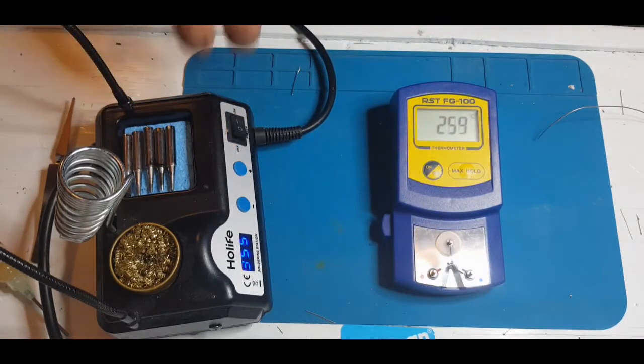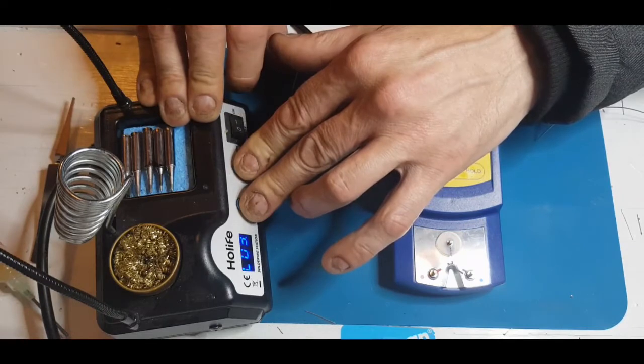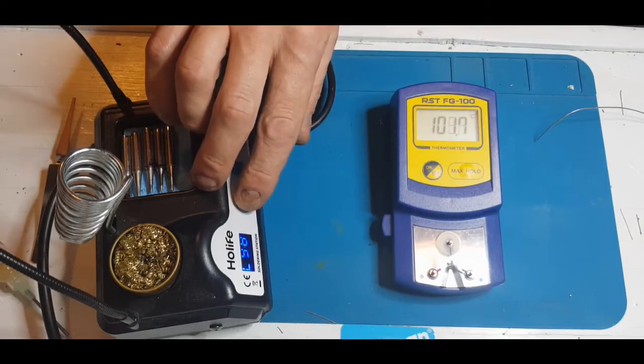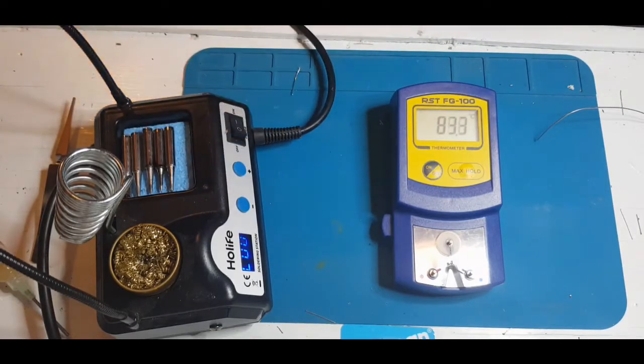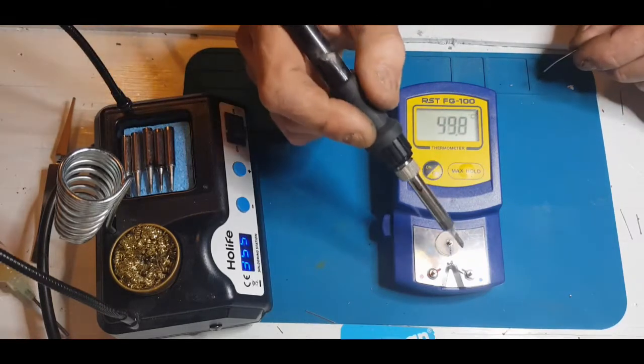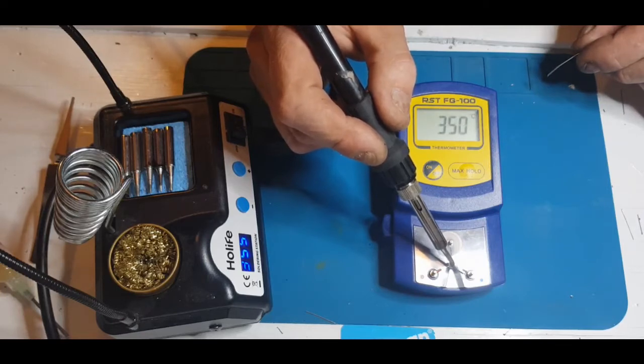So I can calibrate this. I think I have to hold the plus and minus buttons down. Switch it on. Don't know what that does. Let's just leave that to reset itself. Let's try it again. 352. And I've set it at 353.